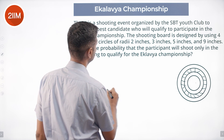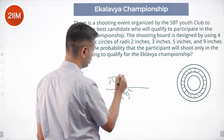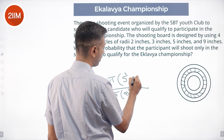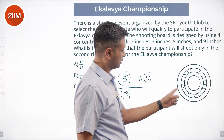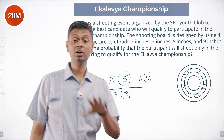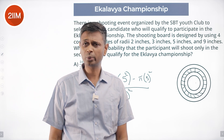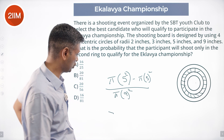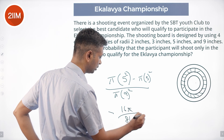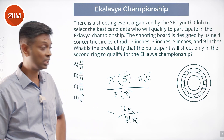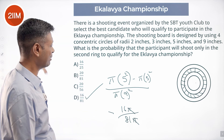The denominator is π times 9 squared. The numerator is π times 5 squared minus π times 3 squared — the circle with radius 5 minus the circle with radius 3. So 5 squared minus 3 squared is 25 minus 9, which is 16. The probability is 16 divided by 81.